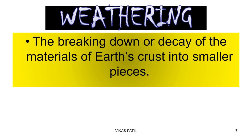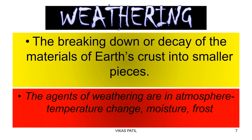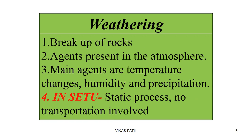Weathering is the simple breaking down or decay of the material of the earth's crust — that's the rocks — into smaller pieces. The agents that cause weathering are in the atmosphere: temperature change, moisture, frost. Weathering is in-situ, meaning it's a static process. Once the rocks are broken, there is no transportation of the broken material.